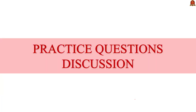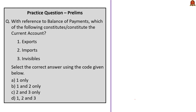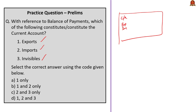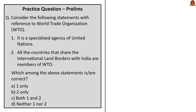The first practice question asks: with reference to balance of payments, which of the following constitutes the current account — exports, imports, invisibles? During our news article analysis we saw that under the current account we have exports, imports, and invisibles, and under invisibles we have services, incomes and transfers. So all three are correct, and the correct answer is option D — 1, 2 and 3.